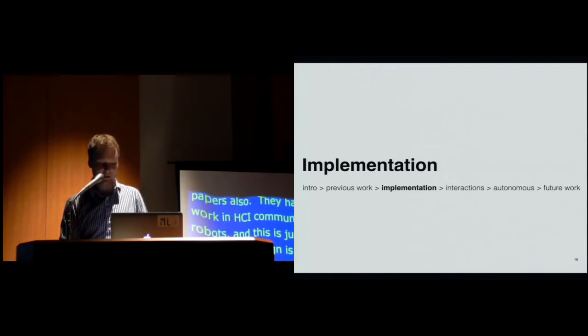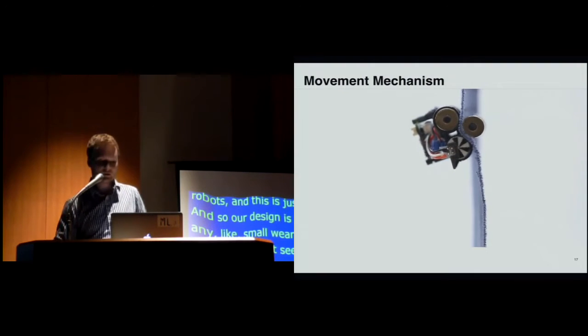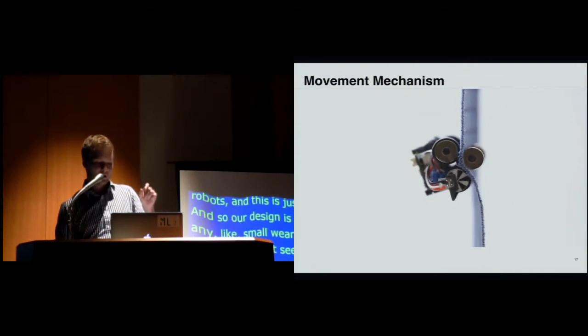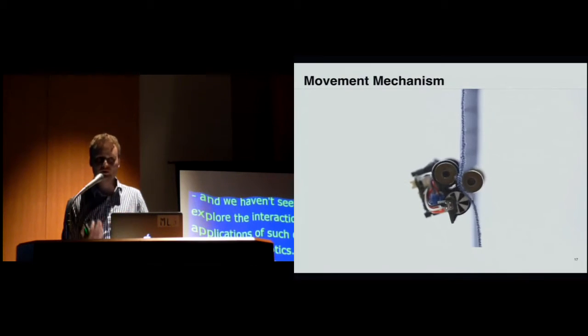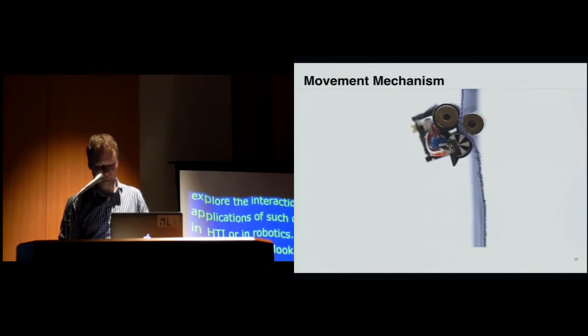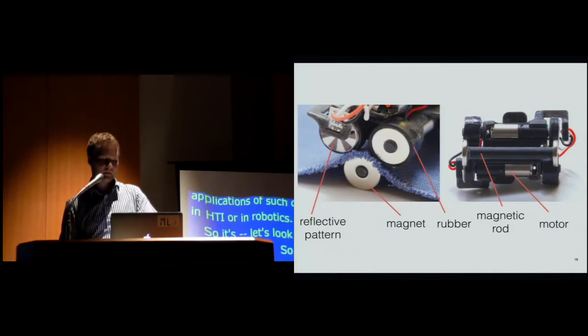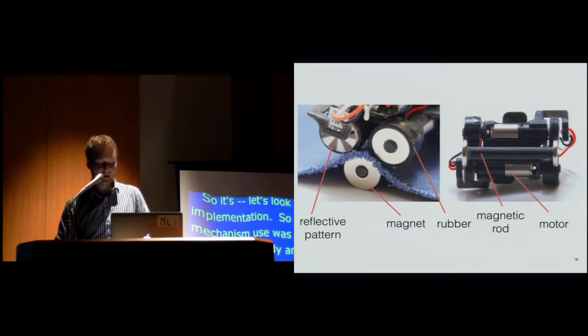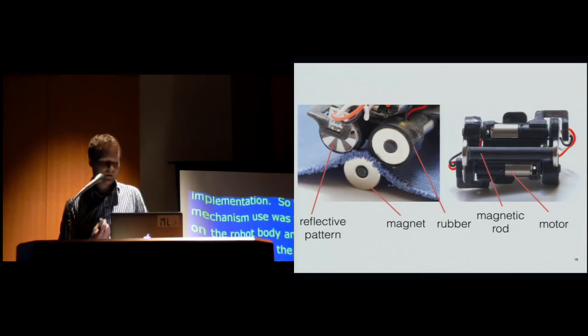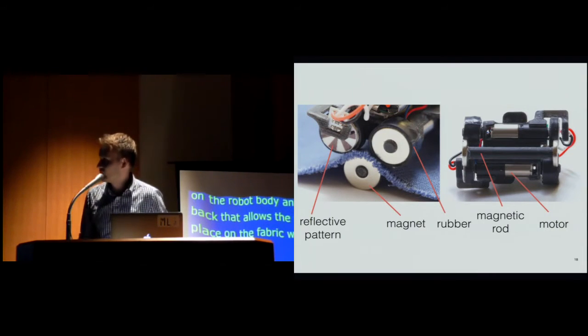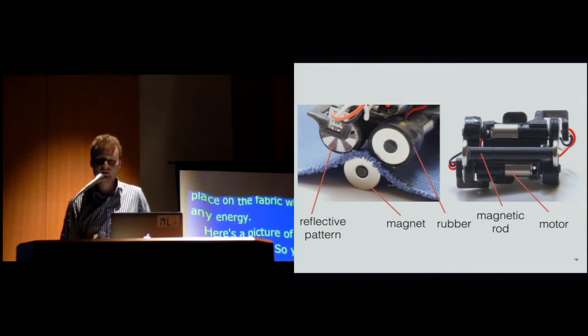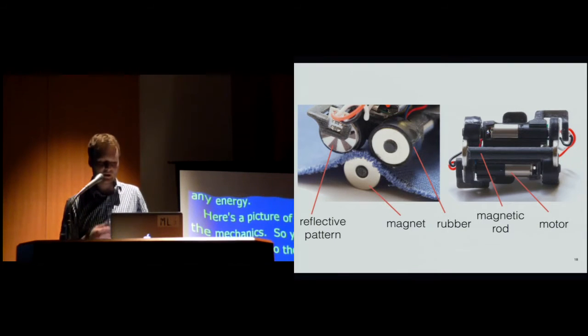So let's look at the implementation. So the movement mechanism we used was, we had a magnet on the Rovable, and there's a magnet on the back which allows the Rovable to stay in place on the fabric without expanding any energy. And here is a picture of the closer look of the mechanics. So you can see there's three wheels. So those wheels are basically strong neodymium magnets, and they stick to each other. And there's a rubber tire which gives it more friction so the wheels don't slip.